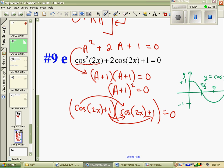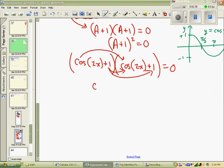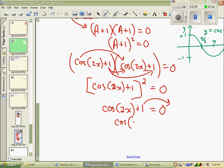So now I have cosine of 2x plus 1, all squared equals to 0. Taking the square root of both sides, I have cosine of 2x plus 1 equals 0. Take the 1 to the other side. Cosine of twice the angle is negative 1.